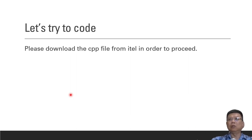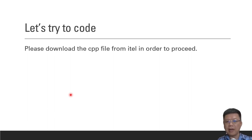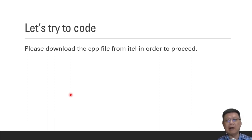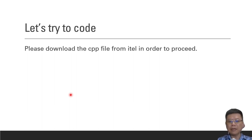Next we will change it to a header file — we will copy and paste the particular code to a header file, and it will totally disappear from our main program, from our .cpp file.